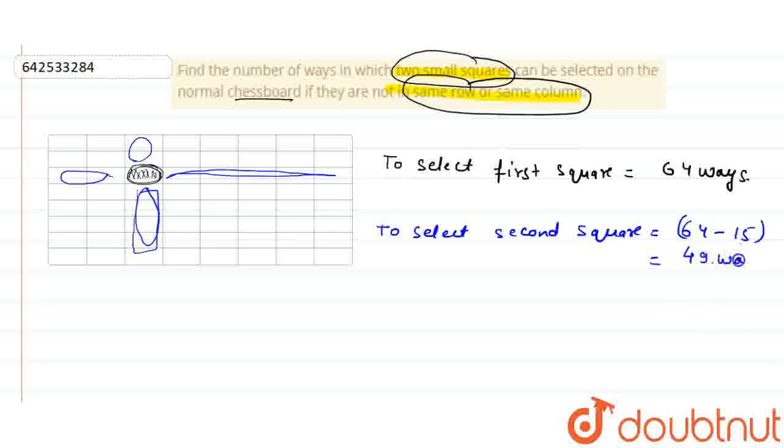So these are the ways in which I can select the second one. Now, if I need to find out the total number of ways of selecting the two squares, I am writing here, number of ways of selecting two squares.